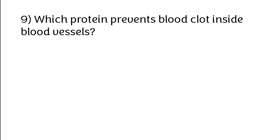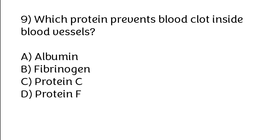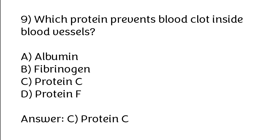Which protein prevents blood clot inside blood vessels? Options: Albumin, Fibrinogen, Protein C, Protein F. The correct answer is Option C: Protein C.